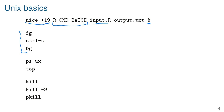To bring a background command back into the foreground, use `fg`. You can then suspend it with Control-Z and put it back into the background with `bg`. Use `ps ux` to get a list of all running jobs, and you might use `grep` on the output to focus on R jobs or particular jobs you're running.